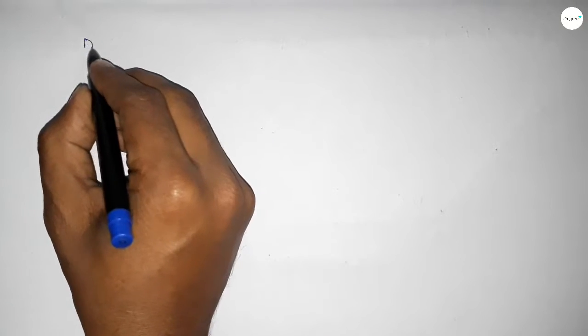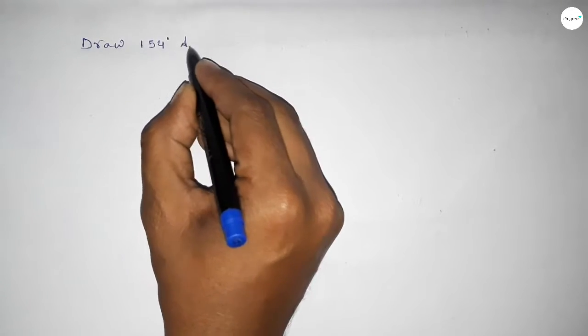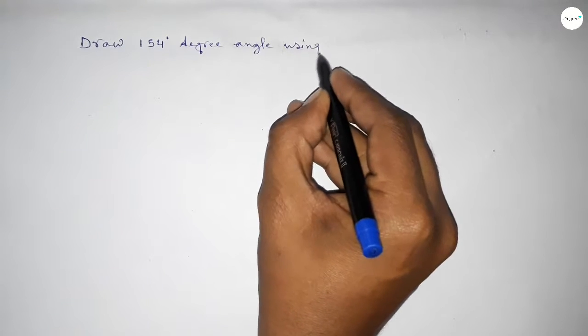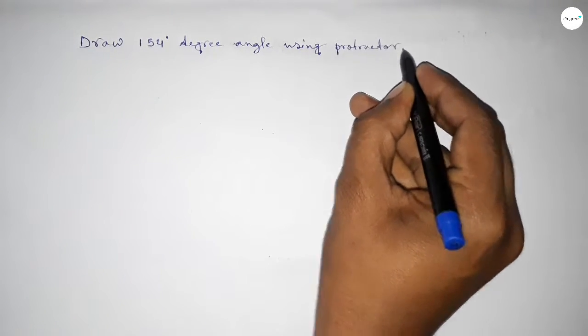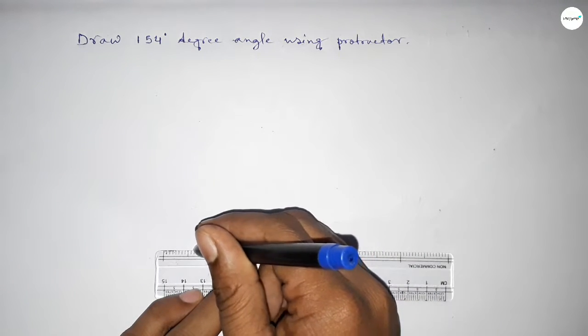Hi everyone, welcome to SI Share Classes. Today in this video, we have to draw a 154 degree angle using a protractor. Let's start the video. First of all, we have to draw a straight line of any length.